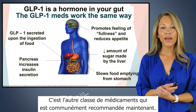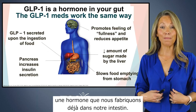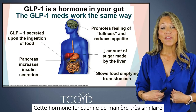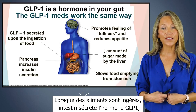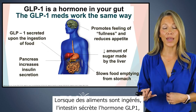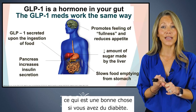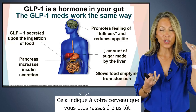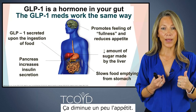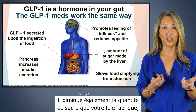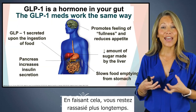What about GLP-1s? This is the other class of medications commonly recommended now. GLP-1 is actually a hormone we make in our gut already. When food is ingested, the gut secretes GLP-1, which has a number of effects: it makes your pancreas secrete more insulin, which is good if you have diabetes; it tells your brain you're full sooner, decreasing appetite; it decreases the amount of sugar your liver makes; and it slows down your stomach from emptying food too quickly, keeping you full longer.